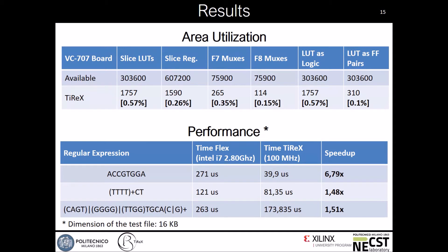Having a valid block design, we succeeded in producing the bitstream to configure the VC707, and the implementation phase of the Vivado toolchain produced a series of results regarding area utilization. As we can see from the first table, the area utilized by the core is minimal, granting us the possibility to have a multi-core environment and thus increase the performance.